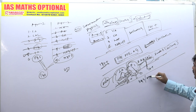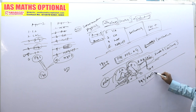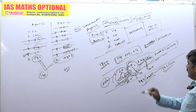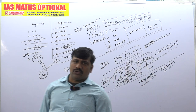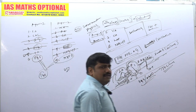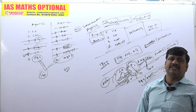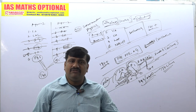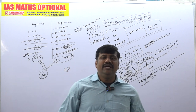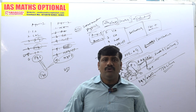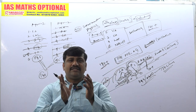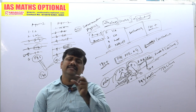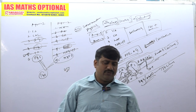Even with more number of classes, total 34 classes is sufficient, and it is also scoring. Therefore, overall, mathematics optional is scoring. Overall, mathematics optional will give you a good score, but you need to know how to prepare, what are the proper basics, and how to present the answer.